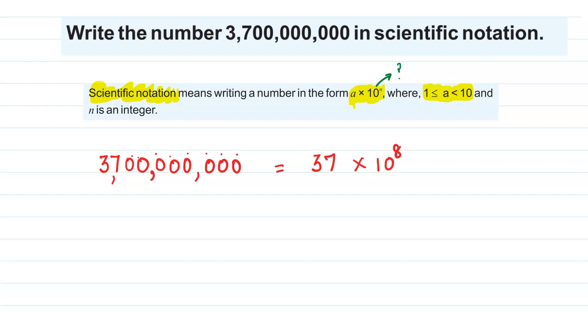Because a should be between 1 and 10, but a is greater than 10. So what can we do? We can divide this by 10 and multiply this by 10. By doing so, we are not changing the value of 37.